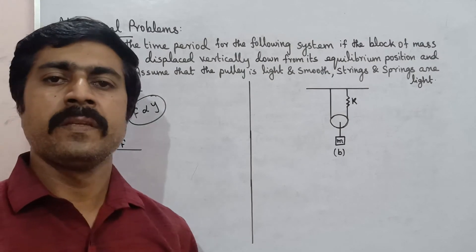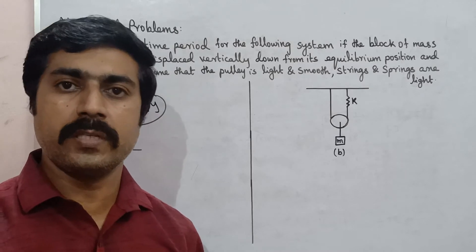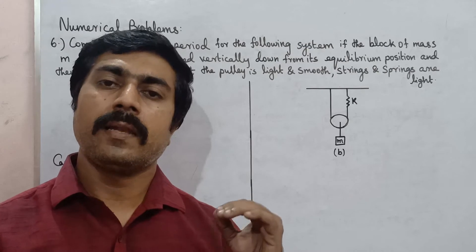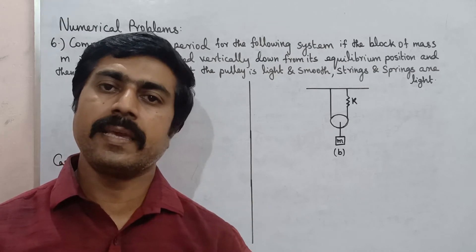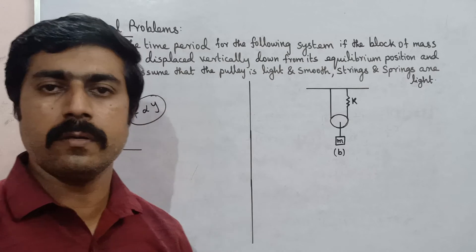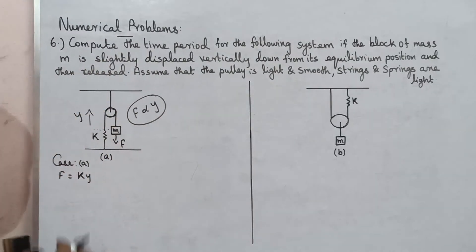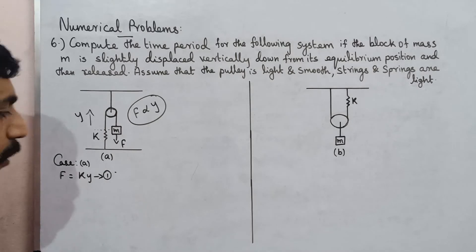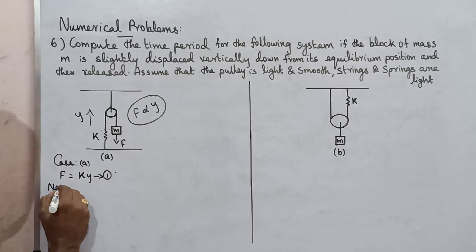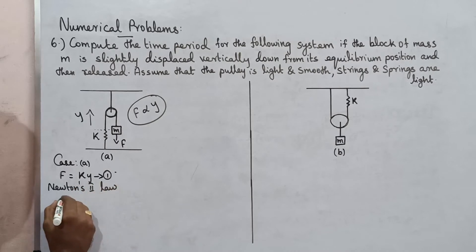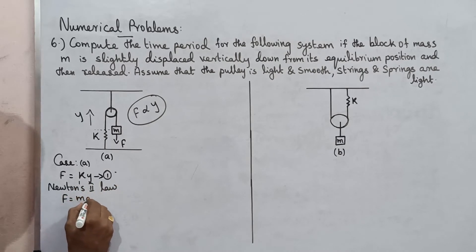The force is directly proportional to Y, where Y is displacement. So F is equal to KY. The force and displacement are in opposite directions for simple harmonic motion, so the vector form is negative. For magnitude, no need to put the negative sign, so it is positive. This is equation number 1. Now applying Newton's second law: F is equal to ma.